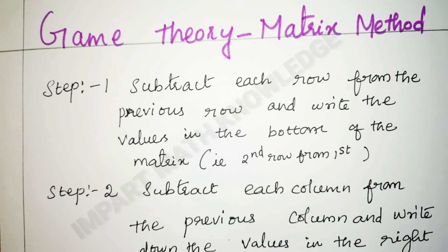In game theory problems, first we have to check whether a saddle point exists or not. If a saddle point exists, we can find the value of the game directly. Otherwise, we go for a convenient method. Here I am going to explain the matrix method.